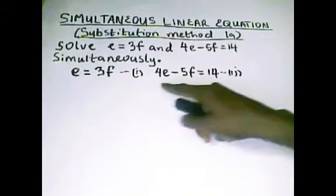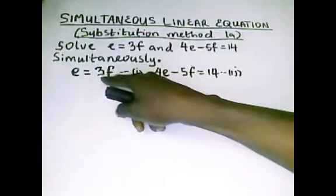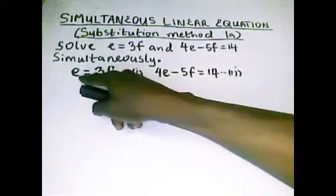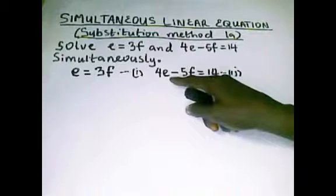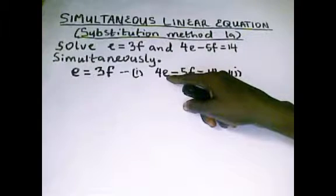From this equation 1, we are to replace it in equation 2 with the value it equals here. Since e equals 3f, then we are going to come to equation 2, and wherever we have our e, we are to replace it with 3f.